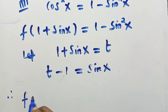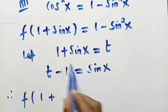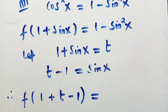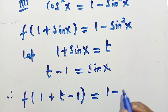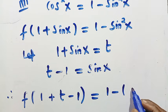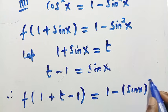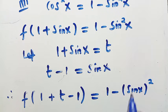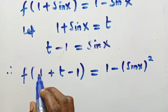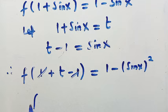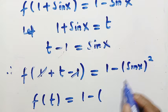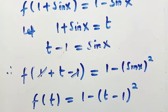Let's replace it. By replacement, we have f(1 + sin x) is t, and it's given as 1 minus sin²x. We can write sin²x as sin x raised to the power of 2. We have to replace sin x as well with t minus 1.